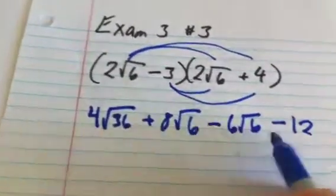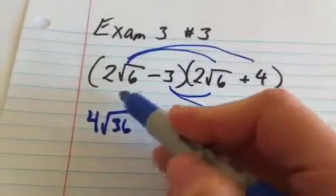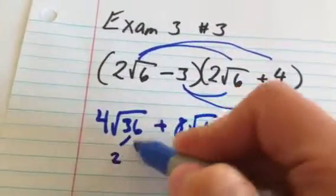So we simplify these radicals if we can. I know the square root of 36 is 6. If you don't see it, go ahead and tree it.